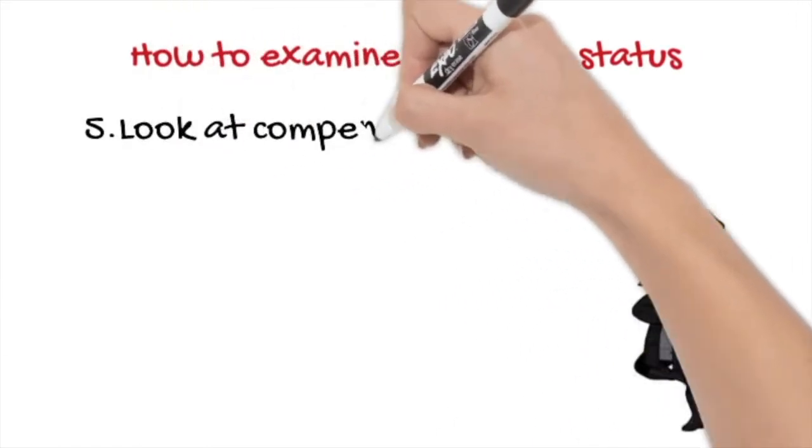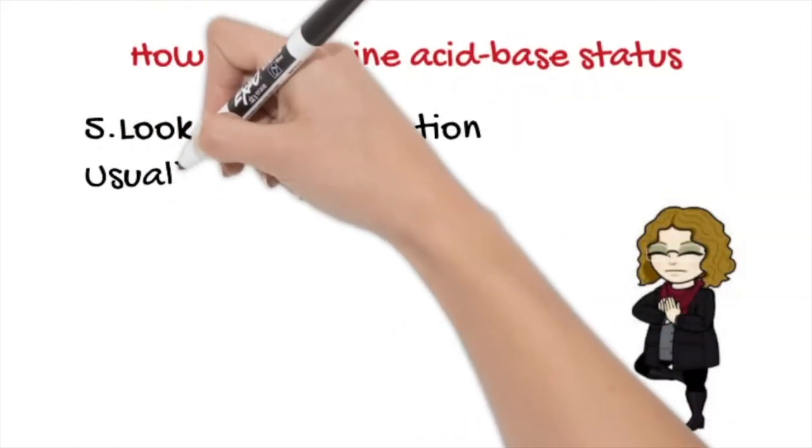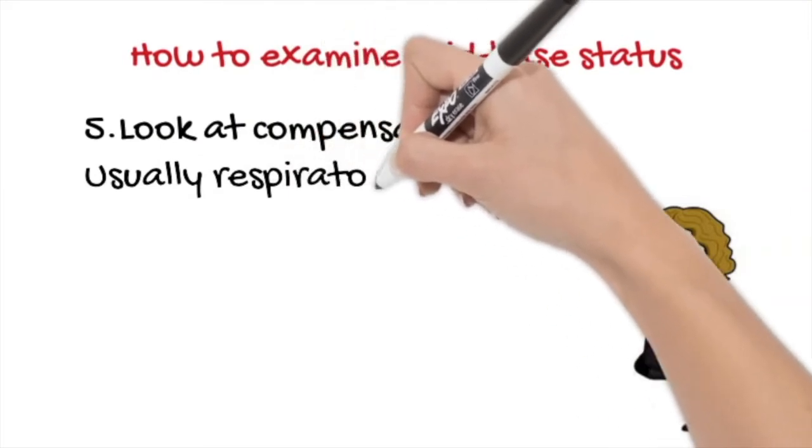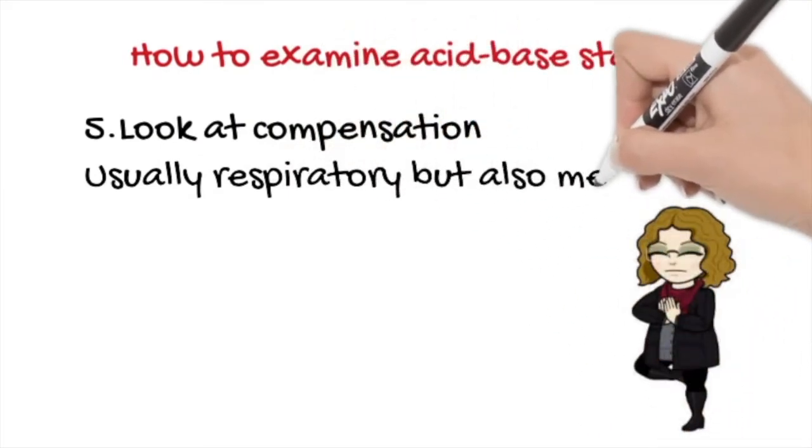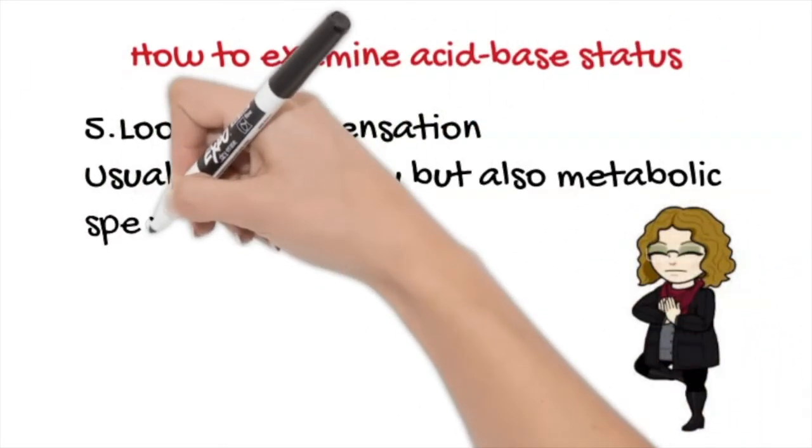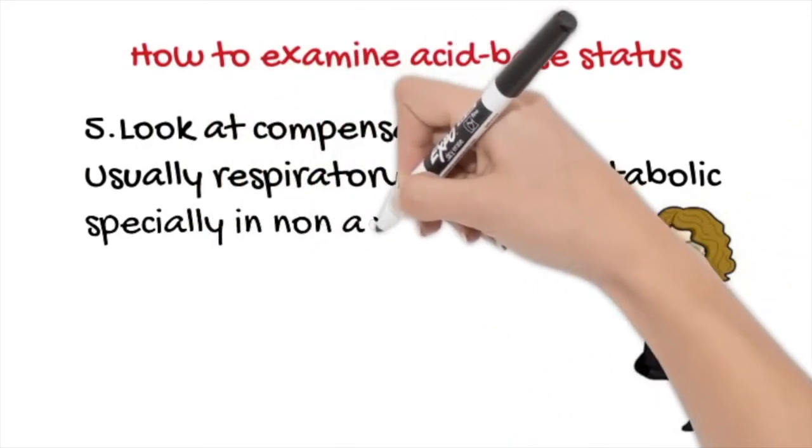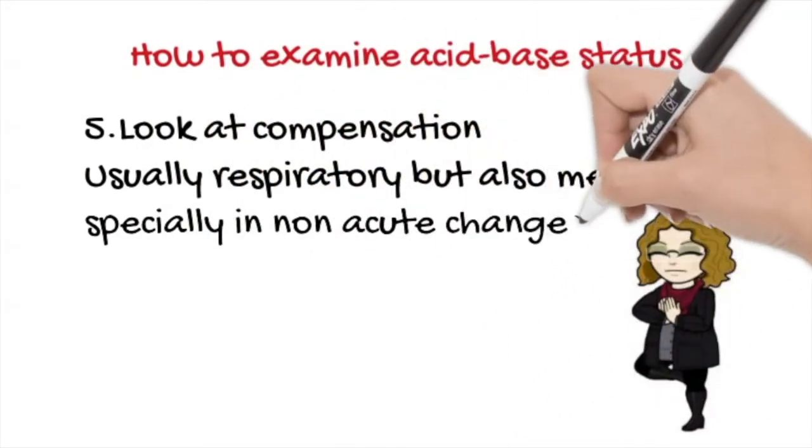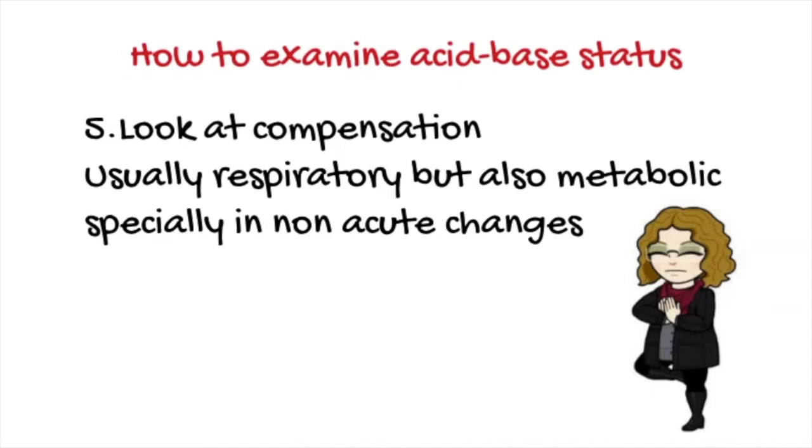So, finally, the last step is to look for primary alterations of the pH and which changes are compensations. Most typical compensations are made by the respiratory system, but in current cases, could be also metabolic changes to compensate the pH.